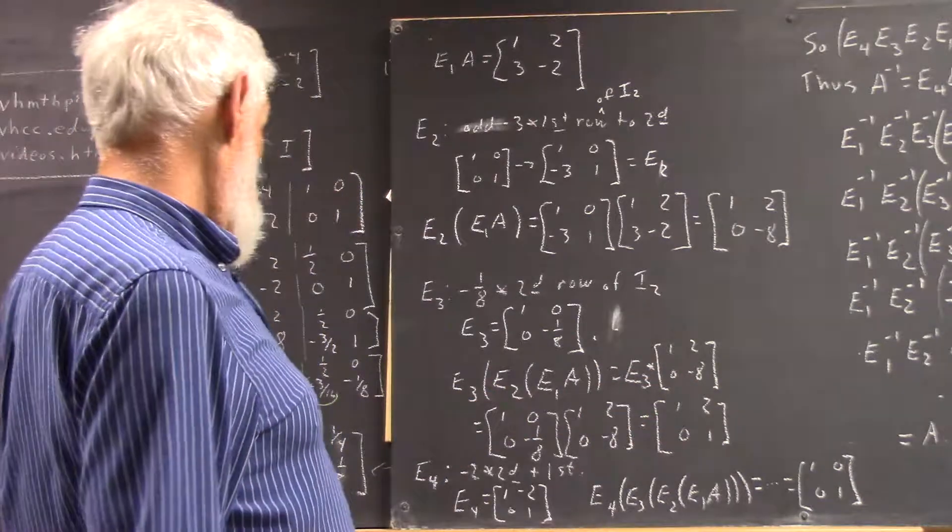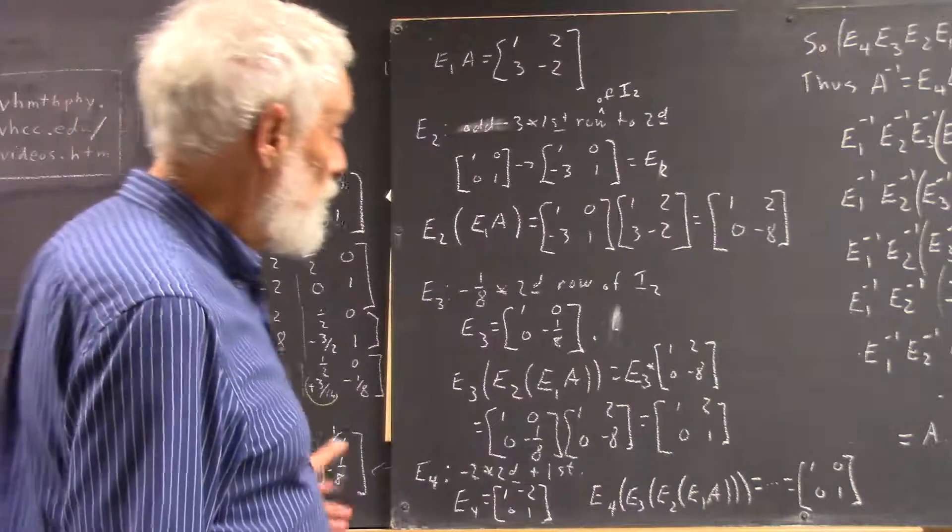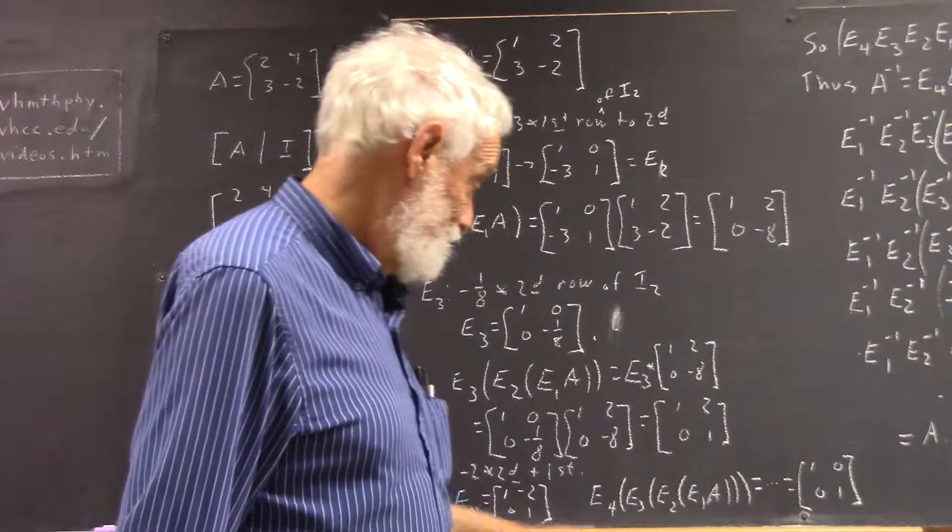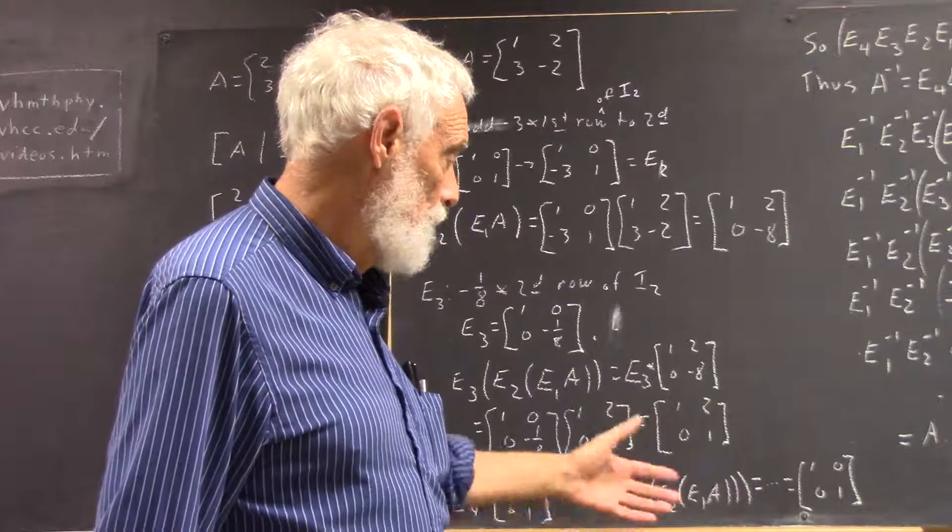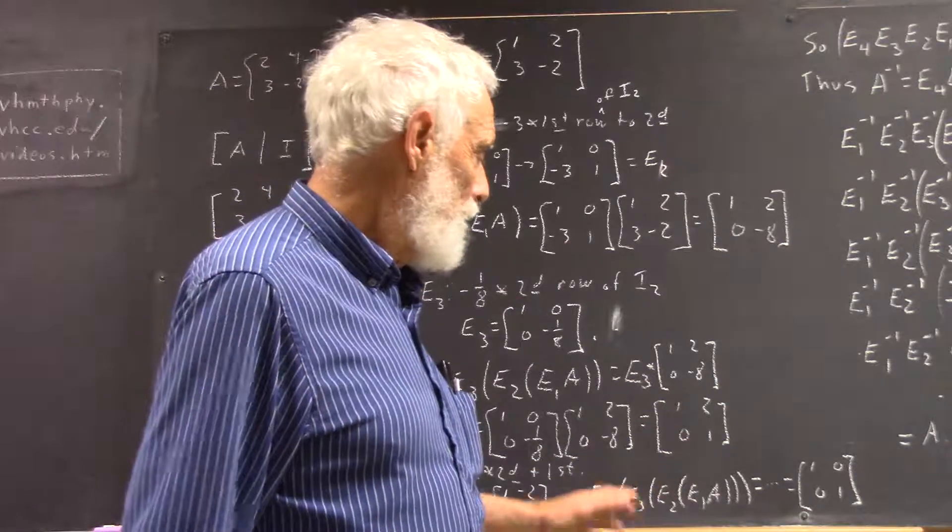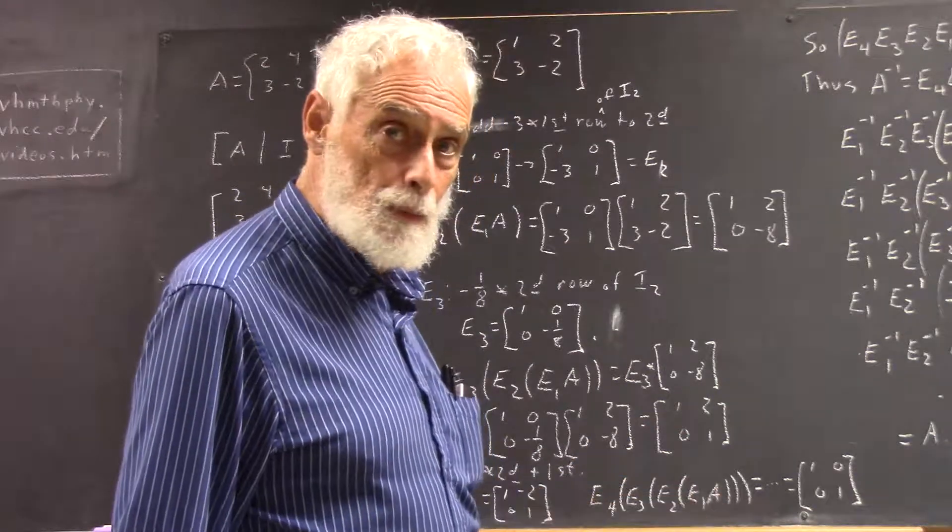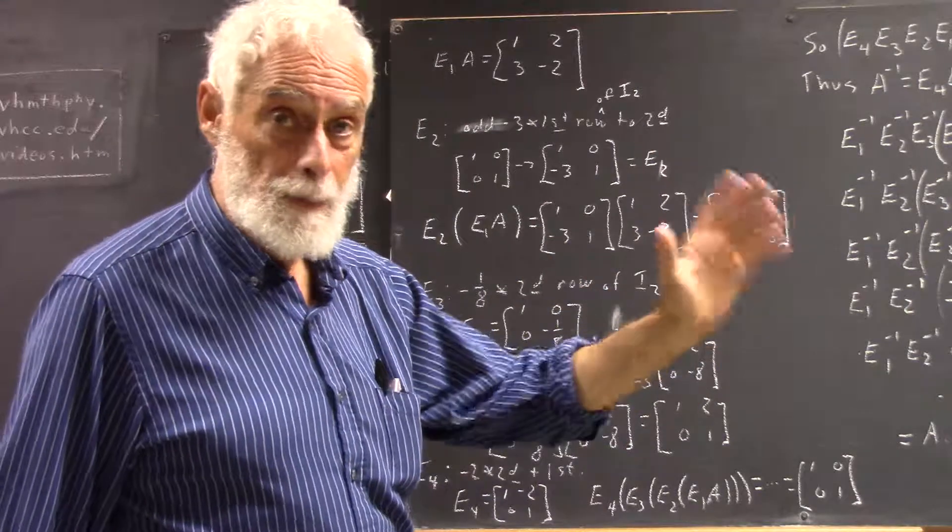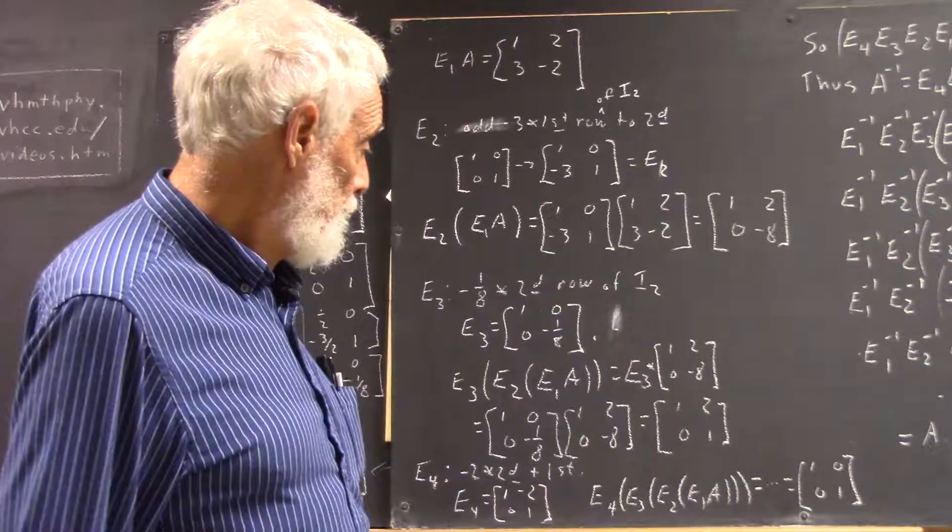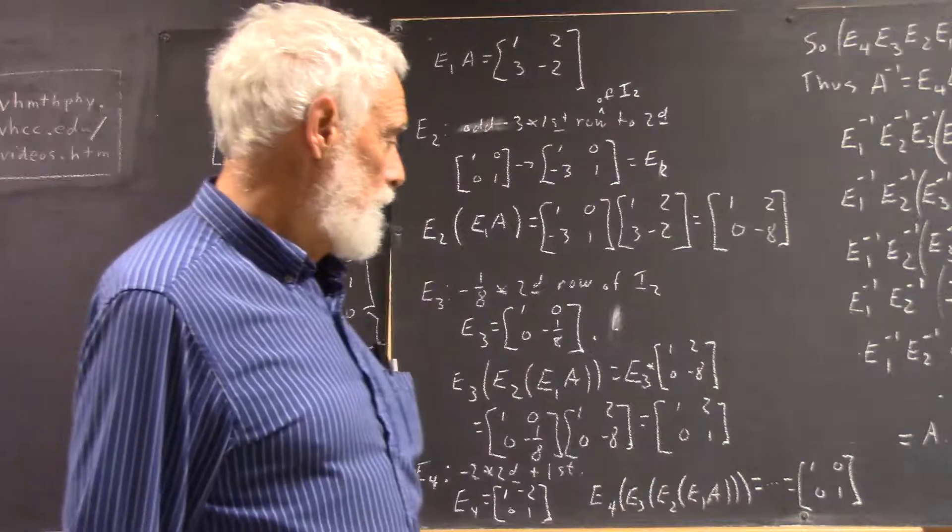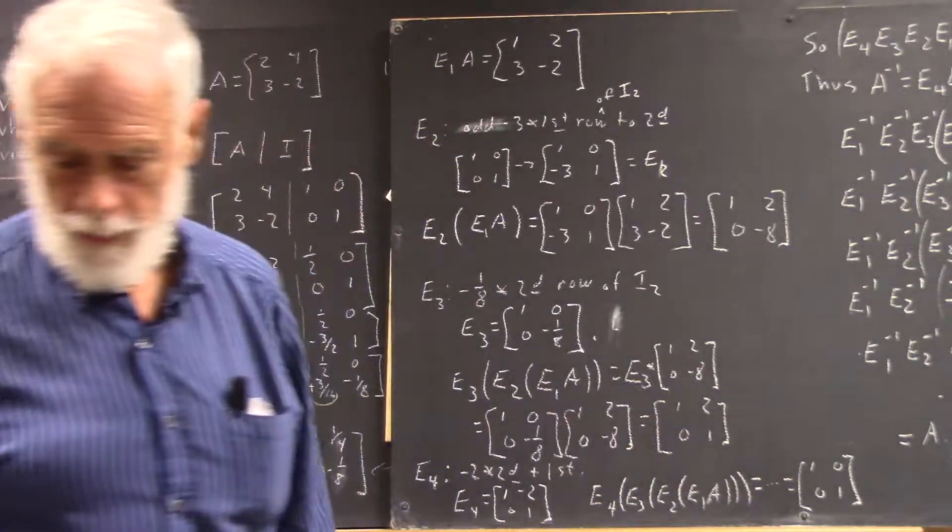So, we've basically factored the matrix into the product, E4 times—well, we haven't really factored the matrix yet. What we've done is we've got the factors of the inverse matrix, but we'll see how that works out. And then, well, we'll go from there.